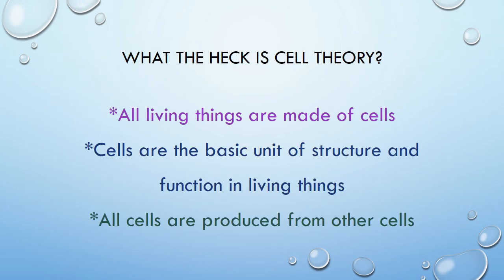Let's go back to cell theory. What is cell theory? Your book gives three parts: all living things are made of cells; cells are the basic unit of structure and function in living things; and all cells are produced from other cells. Let's take a closer look at what each of those means.